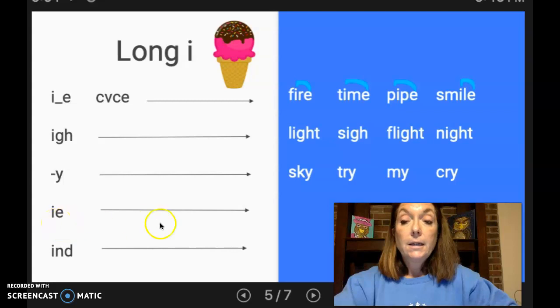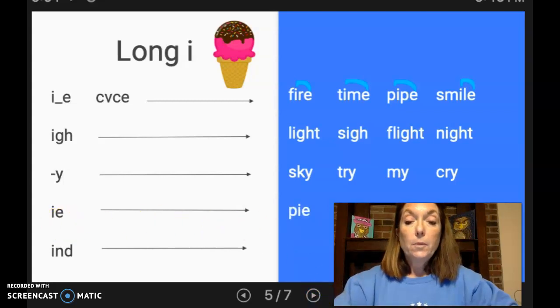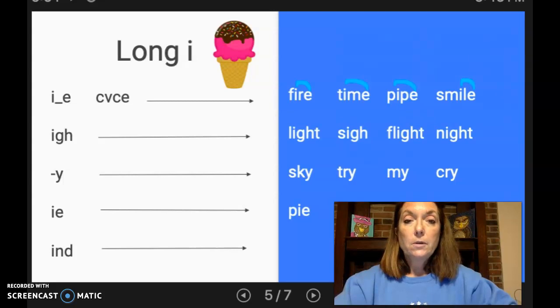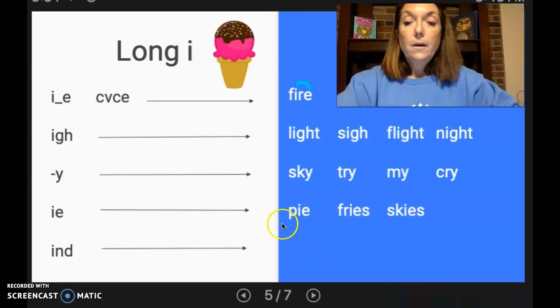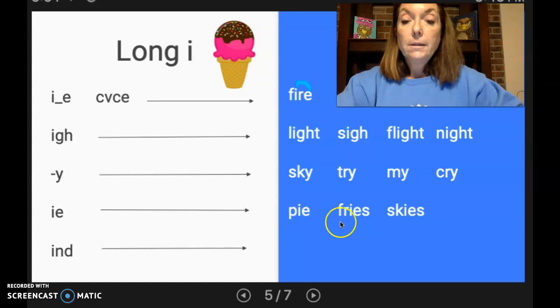IE, again, can sound like an I and not just E. And I'm going to move my picture so you can see these words. We have the word pie, fries, and skies. So usually when two vowels are together, the first one says its name. So it would make sense that this would say I, but it can also say the long E sound. So you might have to try it both ways when you're reading.